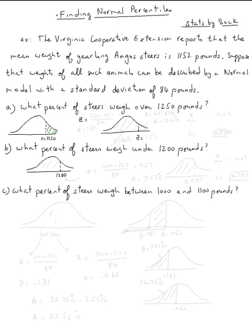So if you look for the z, z is what? Z is x, which is 1250, minus the mean, which is 1152, divided by 84. So z is actually 1.167. In other words, it's about 1.17.